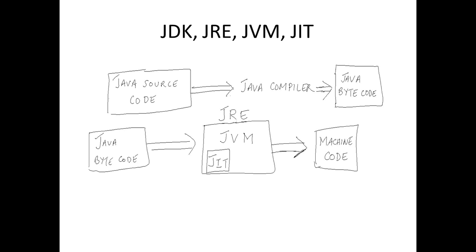Let's look at how this works with a figure. Java source code resides in .java files. The Java compiler (javac) compiles these .java files and creates Java bytecode stored in a .class file with the same name. For example, HelloWorld.java gets compiled into HelloWorld.class, which contains the Java bytecode.